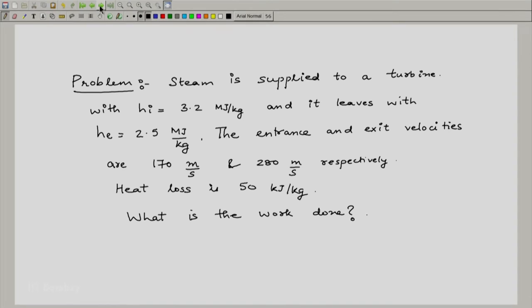The entrance and exit velocities are 170 meters per second and 280 meters per second respectively. The heat loss is 50 kilojoules per kg. What is the work done?